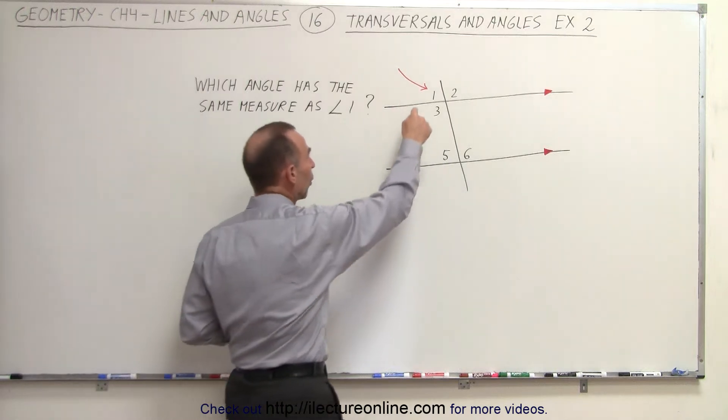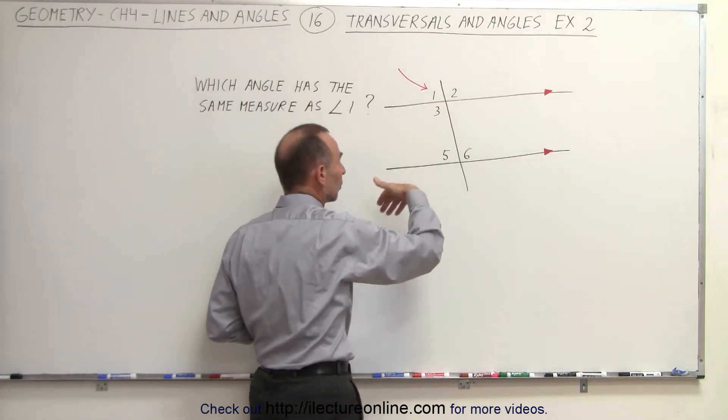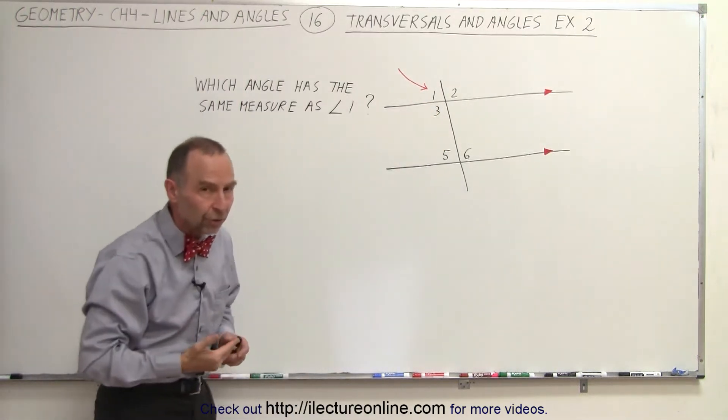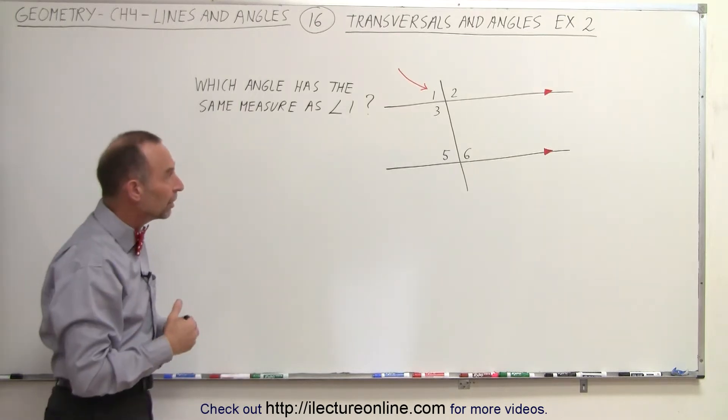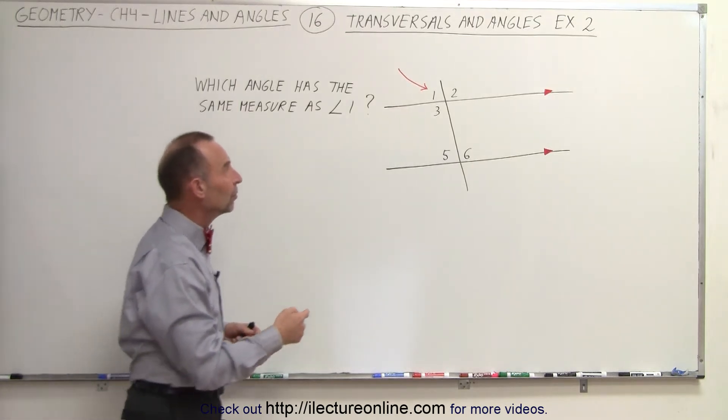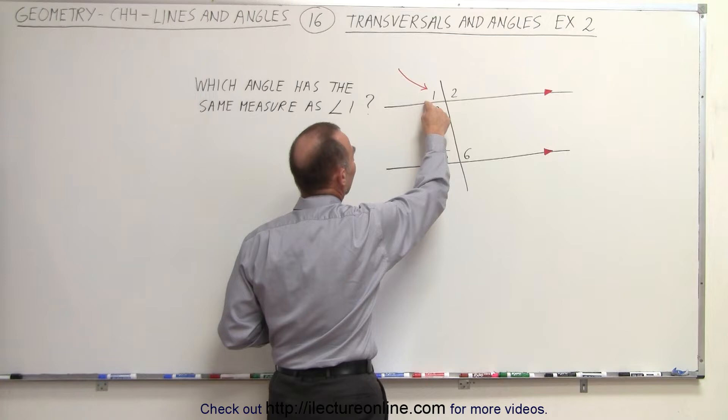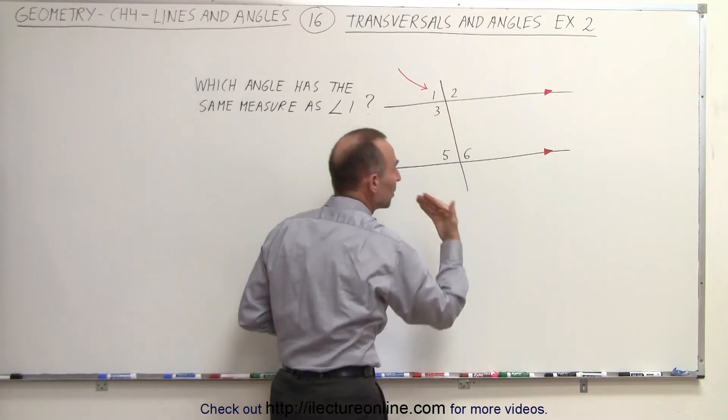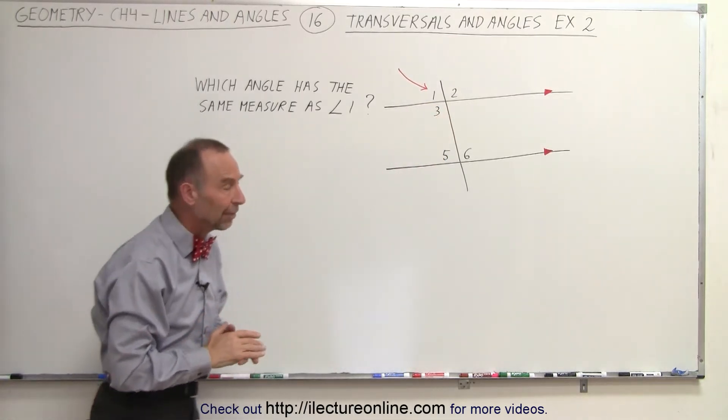Angle 1 and angle 3 are also supplementary. In other words, just like with angle 1 and angle 2, their measures add up to 180 degrees. Again you can see that angle 1 must be less than 90, therefore angle 3 must be more than 90 degrees, and they cannot have the same measure.